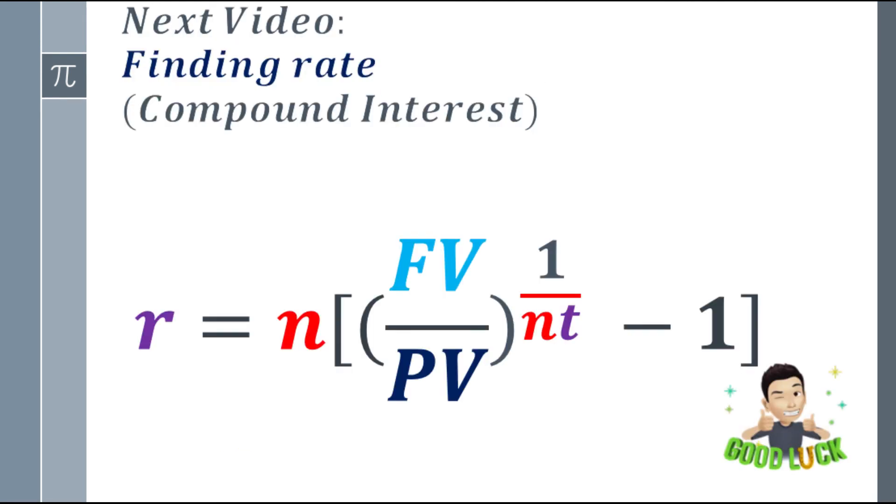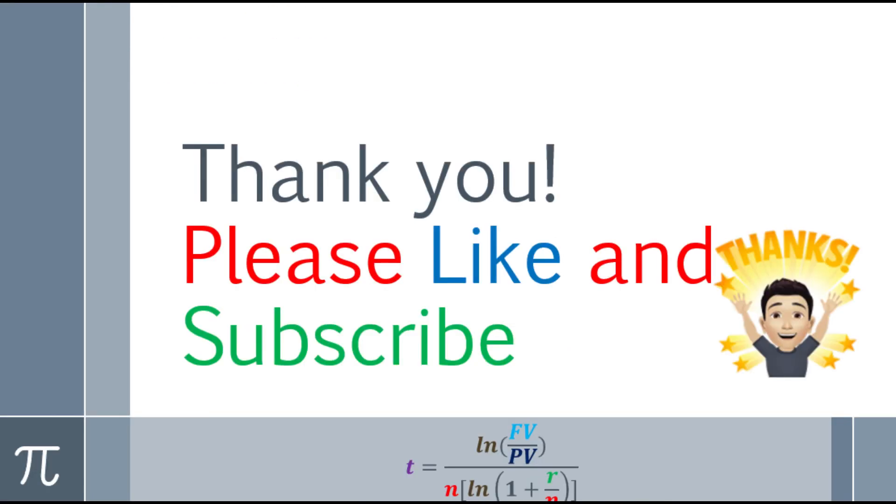That's the end of the lesson on how to find the time in compound interest. Our next video will be about finding the rate in compound interest. We have a formula: R equals N times the quantity FV over PV, and the exponent is 1 over NT—that answer you subtract 1. The parentheses are on screen to be clear. If you would like to comment or suggest another Math & Language video, or if you have an assignment, please comment down below and I'll try to help you. Again, this is James, your Math & Language instructor. Please like, subscribe, and click the bell notification so you're updated with our new Math & Language videos. Thank you. Bye-bye.